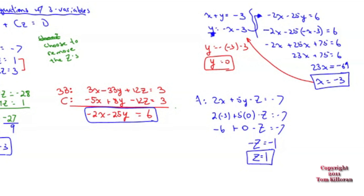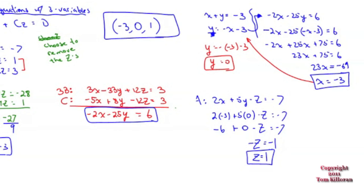I started with three equations, reduced to two, solved for x and y off to the side, then went back to find z. The solution — write it as a coordinate x, y, z — is negative 3, 0, 1. These three planes intersect at the common point negative 3, 0, 1.